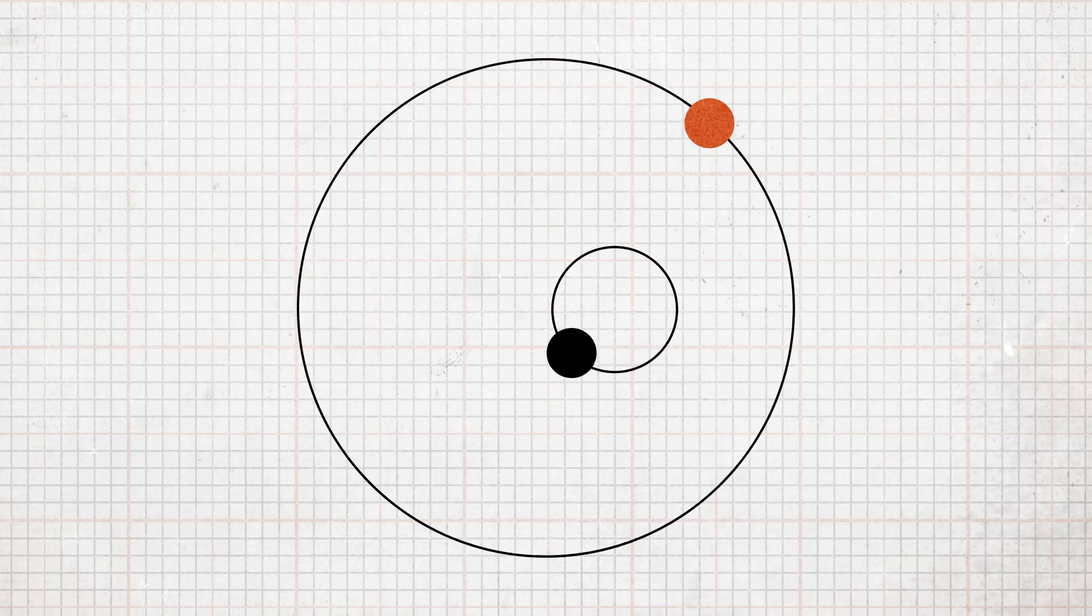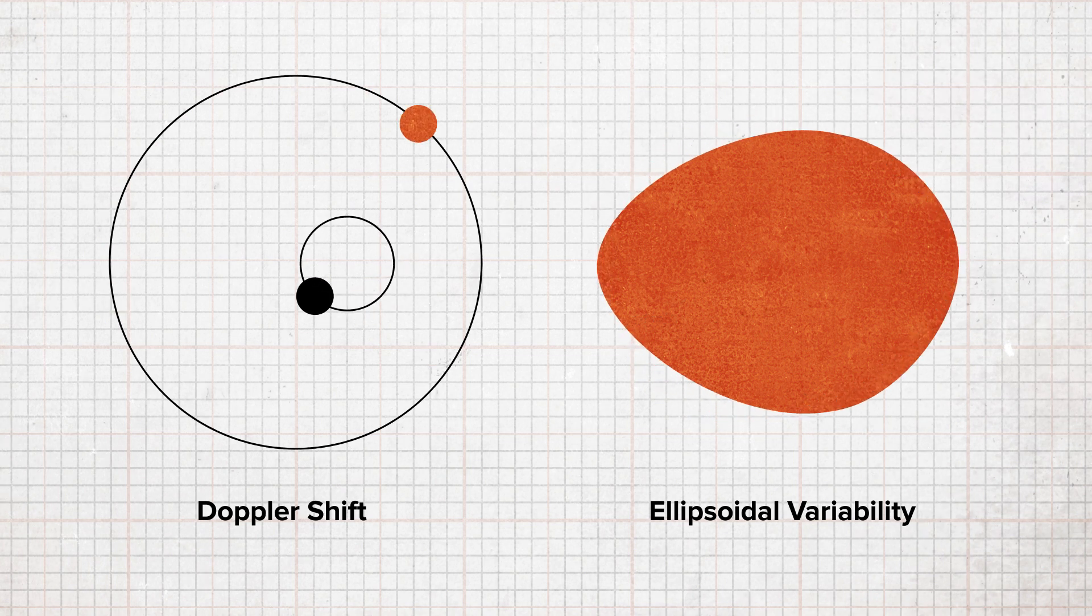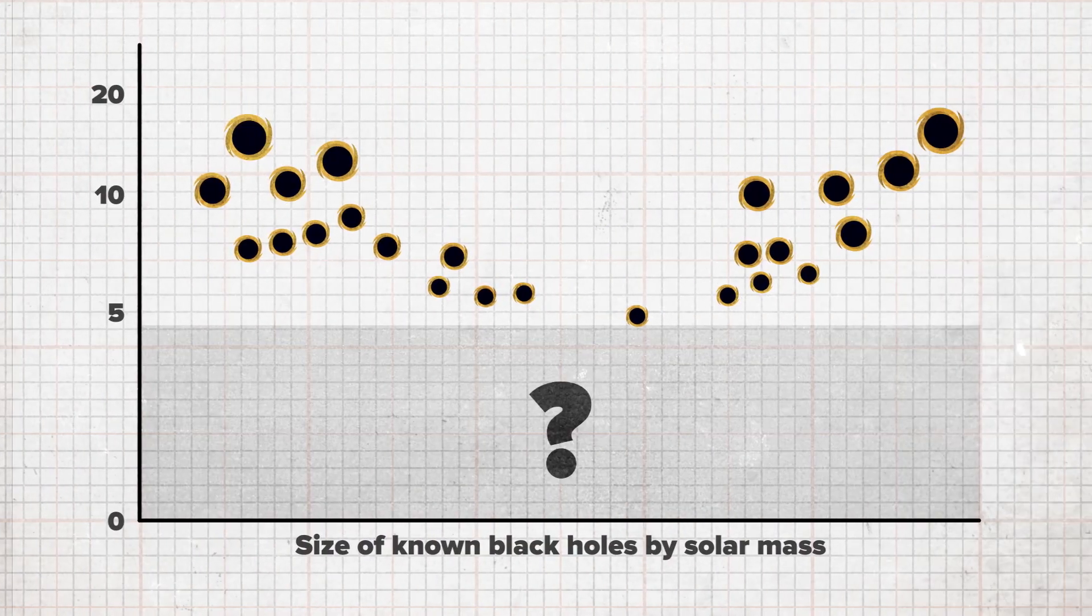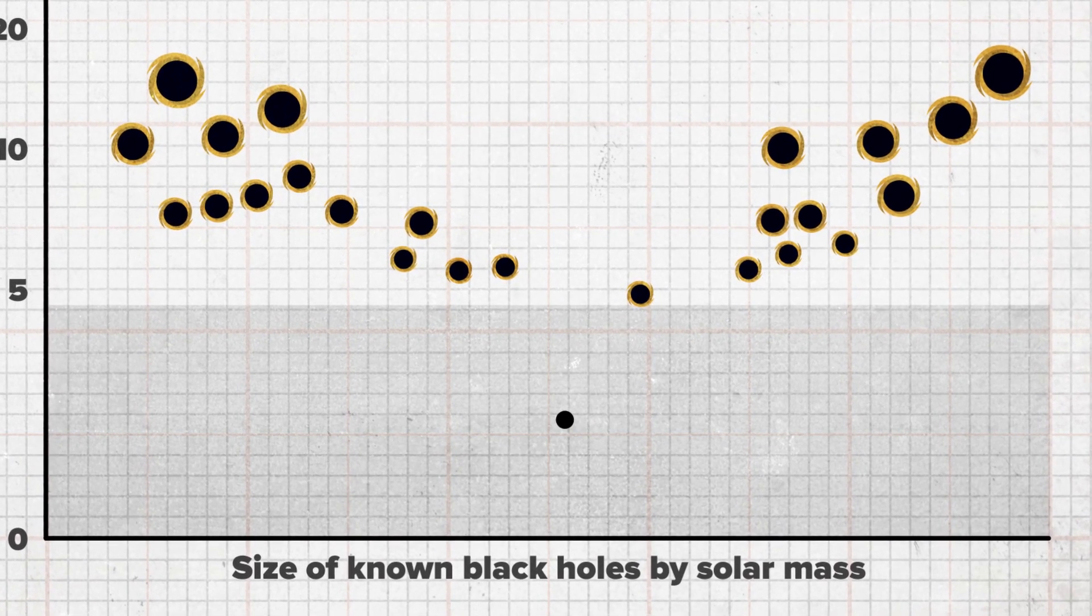By measuring the Doppler shift and ellipsoidal variability, the researchers have identified this as a black hole. What's unique is this black hole is only 1,500 light years away, making it the closest one to Earth. It's also among the smallest black holes to be discovered at only three times the size of our sun.